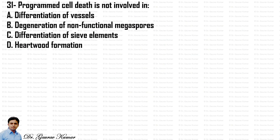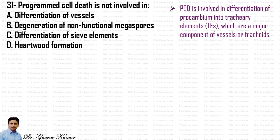The first question asks: programmed cell death is not involved in which of the following — differentiation of vessels, regeneration of non-functional megaspores, differentiation of sieve elements, or heartwood formation? Programmed cell death (PCD) is involved in differentiation of procambium into tracheary elements, which are a major component of vessels or tracheids.